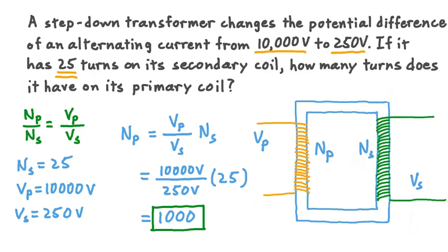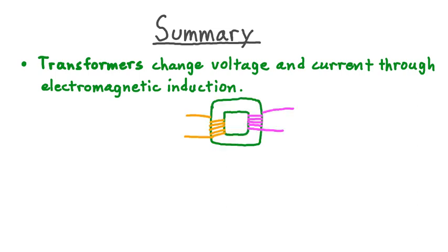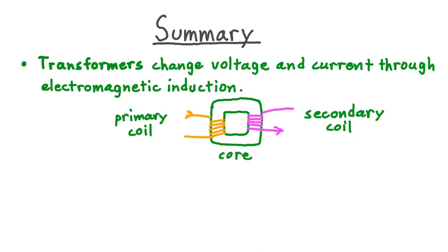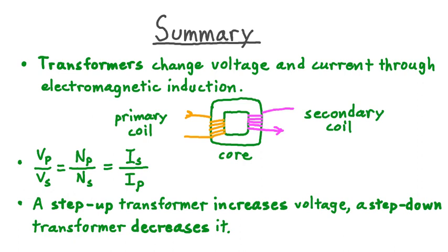Let's take a moment to summarize what we've learned about electromagnetic induction in transformers. Transformers change voltage and current through the process of electromagnetic induction. They have three basic components: a primary coil that current is input through, a secondary coil that current is output from, and a core — typically a solid metal material — that connects these two coils. The ratio of the primary voltage to the secondary voltage equals the ratio of the number of turns in the primary coil to the number of turns in the secondary coil. The ratio of secondary coil current to primary coil current equals the ratio of the number of turns in the primary to the secondary coil. Finally, a step-up transformer increases voltage across the transformer, while a step-down transformer decreases it.